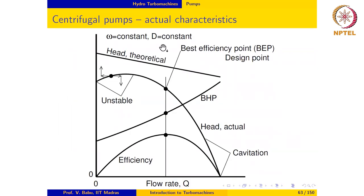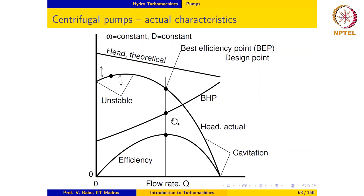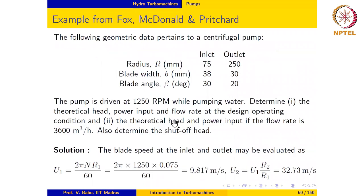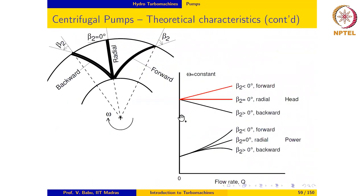Let us now look at the actual characteristic of a centrifugal pump. Here we have the actual head versus discharge characteristic and the variation of BHP with flow rate of the centrifugal pump. This is a backward curved blade design, and we can see how it compares with the actual characteristic.